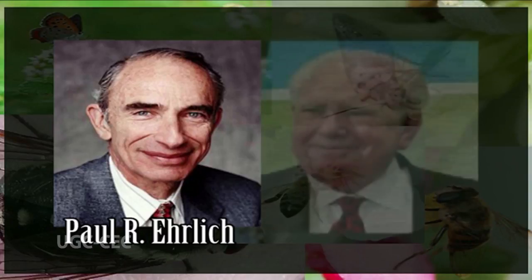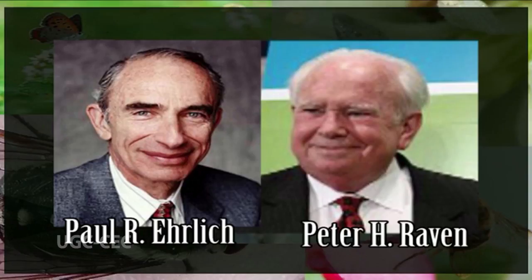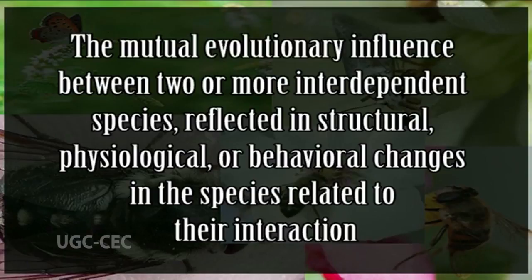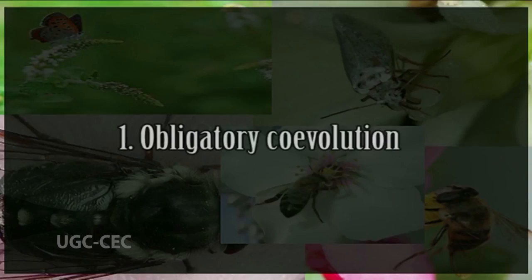In biology, the term co-evolution, coined by Ehrlich and Raven in 1964, is the mutual evolutionary influence between two or more interdependent species, reflected in structural, physiological, or behavioral change in the species related to their interaction. The mutual interrelations between entomophilous or zoophilous flowering plants and their pollinators include the following types of co-evolutionary systems. The first is obligate co-evolution, in which the reproduction of each partner is closely and directly dependent on the other, including extreme one-to-one co-evolution systems.